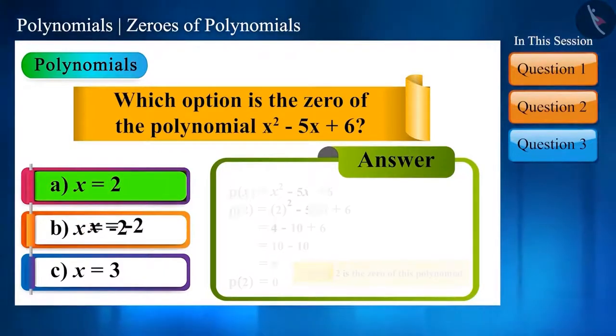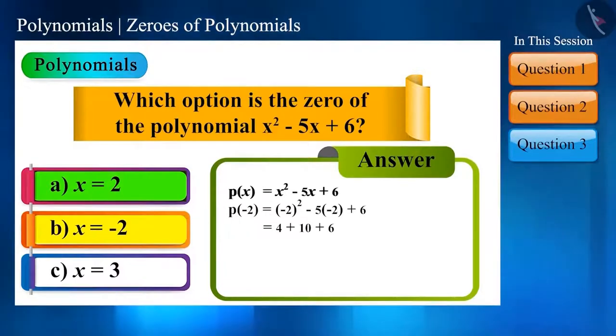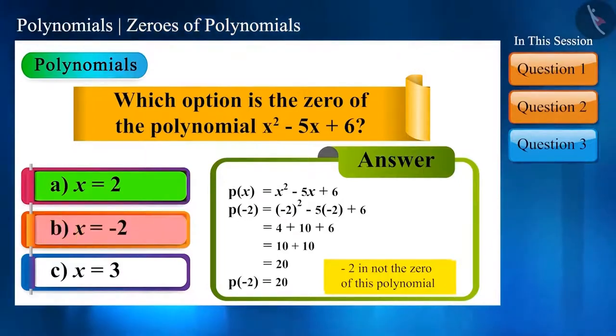In the same way, the value of the polynomial with x = -2 is 20. It means that -2 is not the zero of this polynomial.